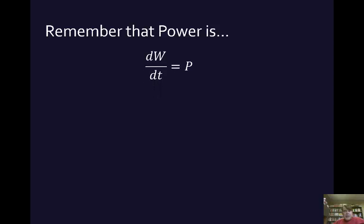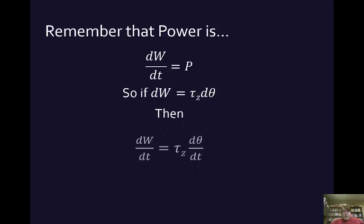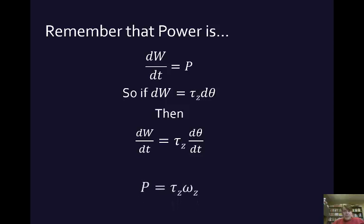Finally, we have power. Power is the change in work per time, dW/dt. Since dW equals torque dθ in rotational situations, we take the derivative: dW/dt equals torque times dθ/dt. Now dW/dt is power, and dθ/dt is angular velocity omega. So power in relation to something rotating is torque times angular velocity. There we have the rotational analogs for work and power corresponding to what we saw in straight-line motion in Chapter 6.